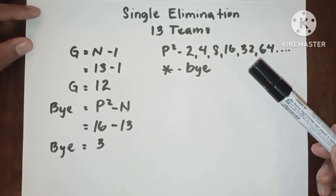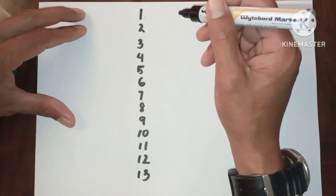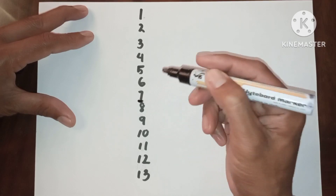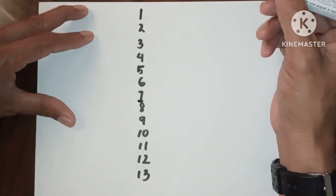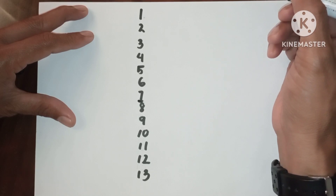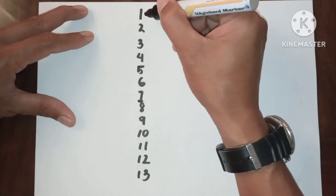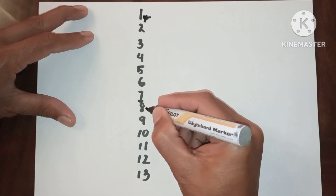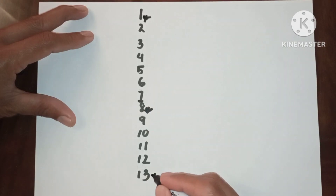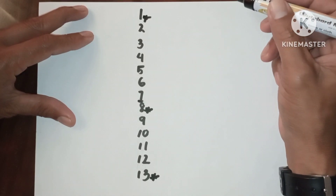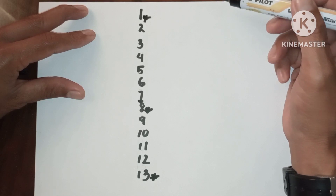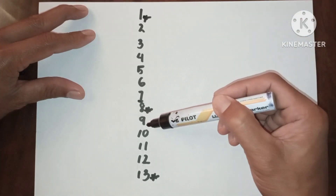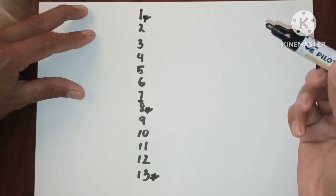Now let's proceed to the diagram. We need to bracket 13 teams into two sides — between 7 and 8. Since we have three byes, we need to place all three byes properly in positions 1, 8, and 13. This means we have 10 competing teams in the first round.